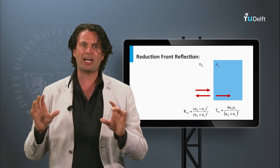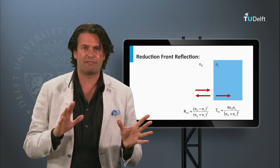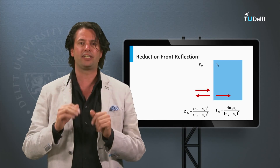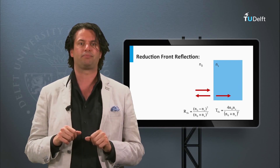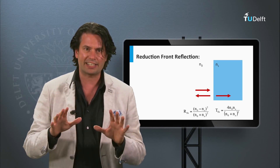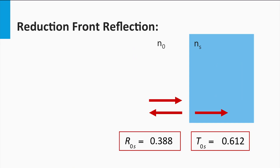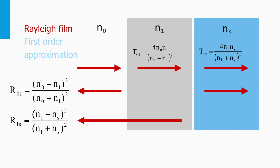Using these basics, we will look at the interface of silicon, the most common material used for solar cells. Consider an air-silicon interface, and for simplicity, light under perpendicular incidence at a wavelength of 500 nm. This example is included as an exercise in this week's homework. The refractive index of air is 1, and that of silicon is 4.3 at a wavelength of 500 nm. The Fresnel coefficient tells us that the optical losses due to reflection are significant at this interface — the reflection is 38.8%.